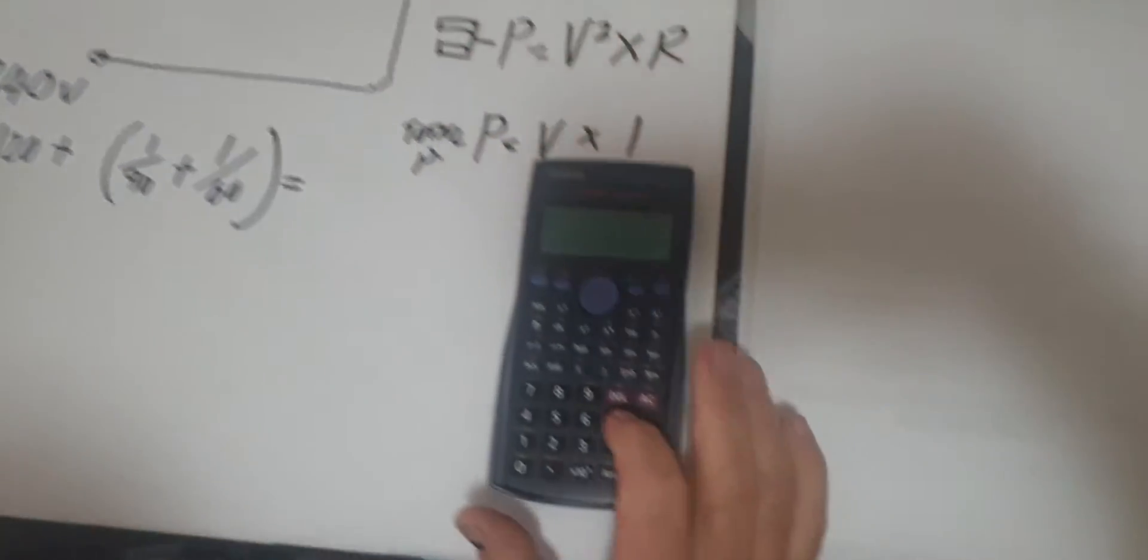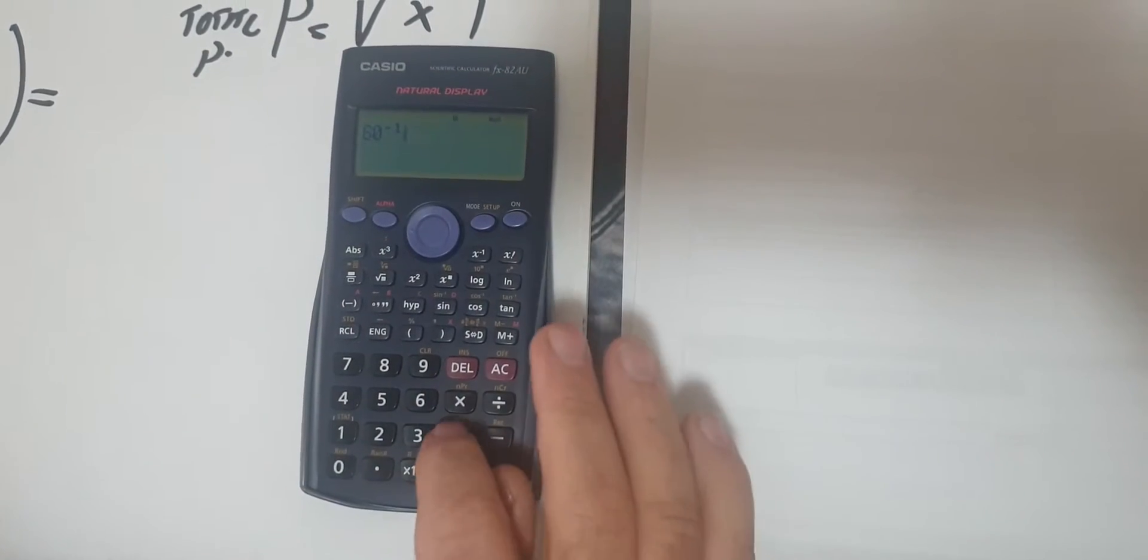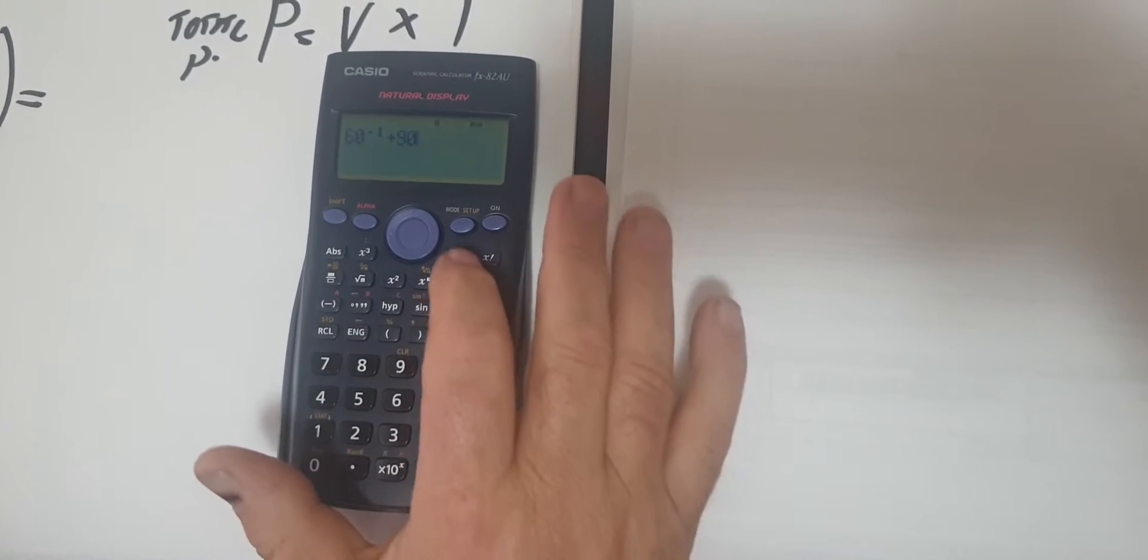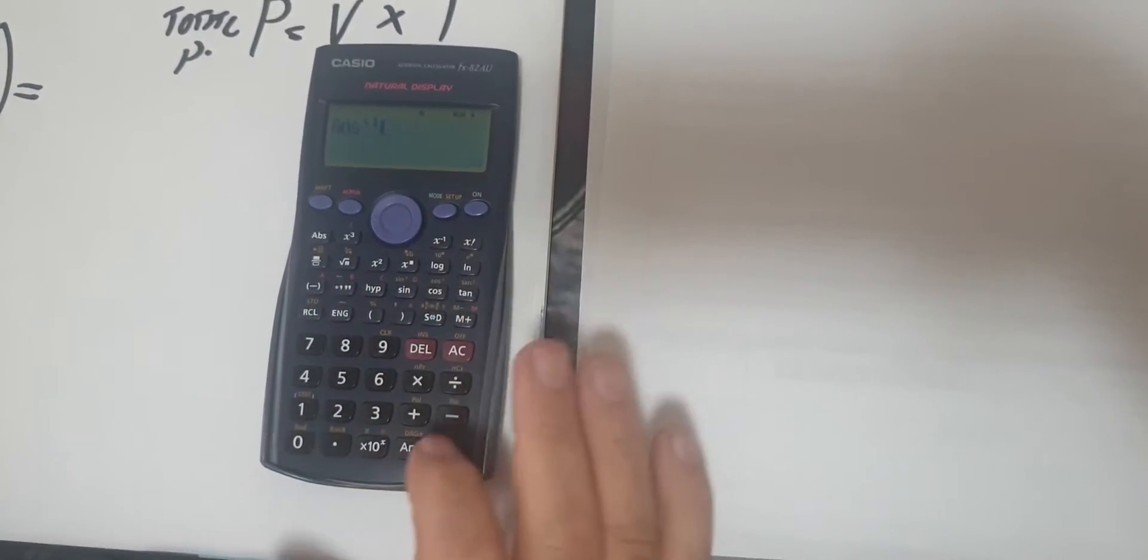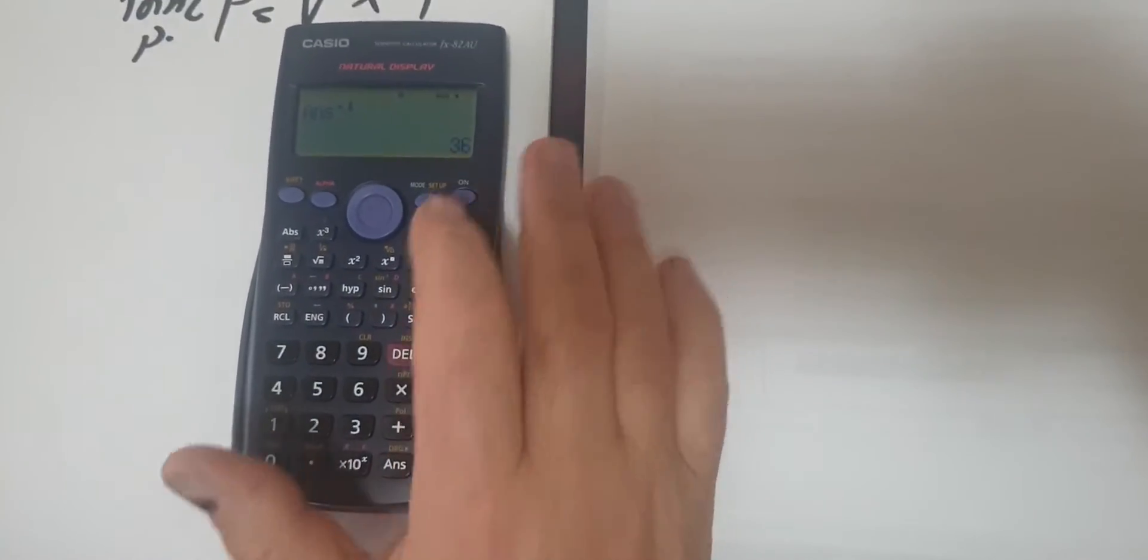So the first thing I'm going to do is put 60, and then do the X to the minus 1, so I've got 1 over 60 now, plus 90. Push the X to the minus 1, push equals, push X to the minus 1 again, and we get an answer of 36. So the first one is 36.